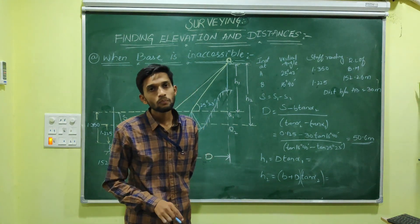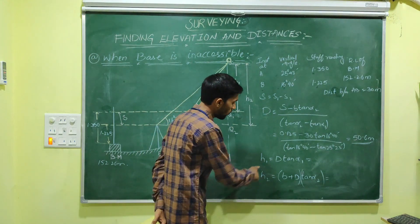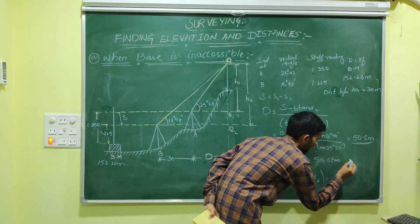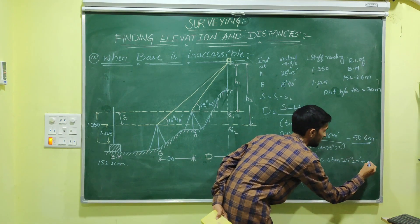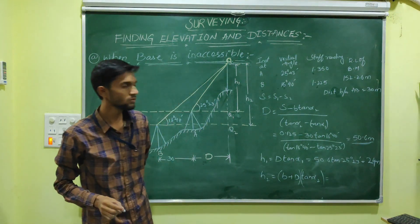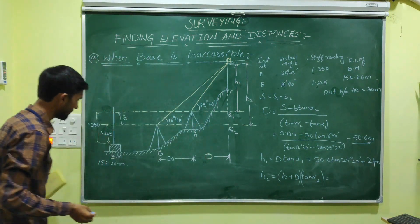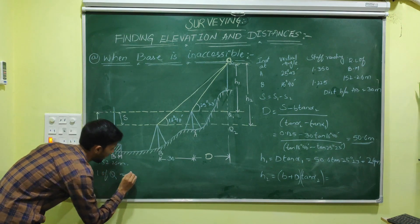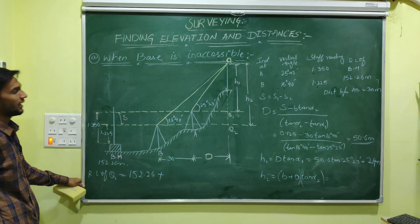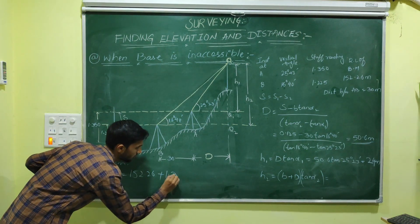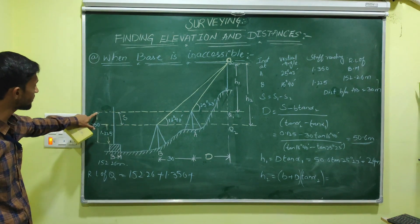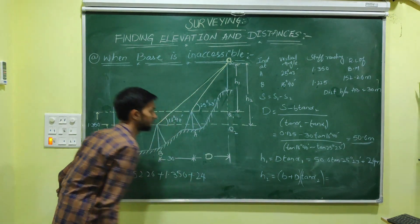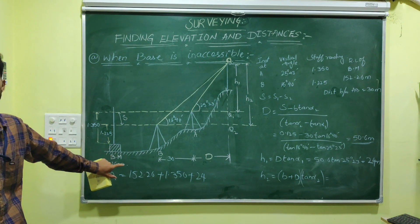Then find H1. The formula is H1 equals D·tan(alpha 1). D is 50.6, and alpha 1 is 25°23'. This gives H1 equals approximately 24 meters. Now find the RL of Q: RL of Q equals RL of BM plus S1 plus H1, that is 152.26 plus 1.350 plus 24, giving the RL of Q.